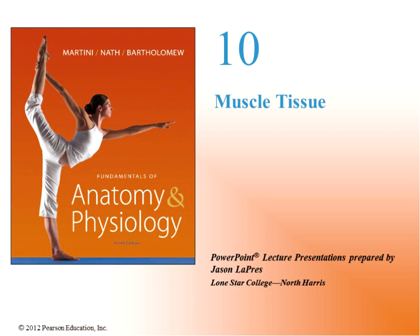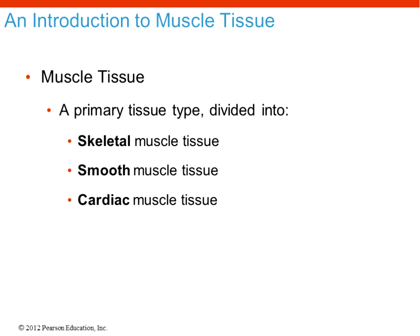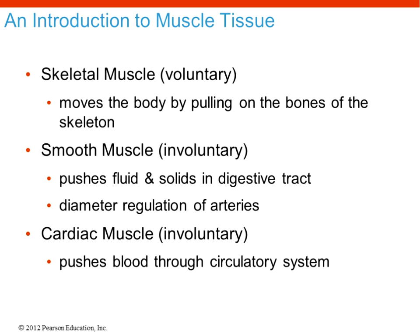This is the third lecture of the second unit on muscle tissue. It corresponds with what we're doing in lab, where you're identifying all the skeletal muscle. Here in lecture, we're going to look more at the physiology of muscle — how it works, how it actually contracts — and put all those pieces together. There are three types of muscle tissue: skeletal, smooth, and cardiac.